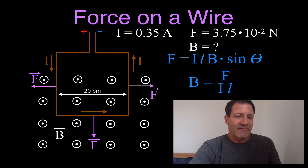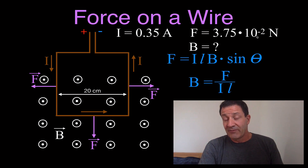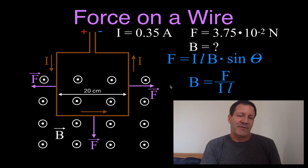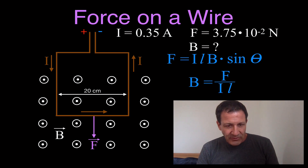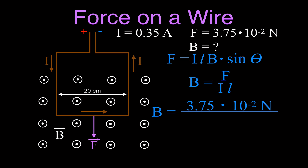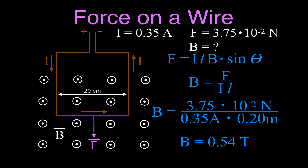So there is a force on each side of that loop. The force on the left side is to the left, and the force on the right side is to the right — equal and opposite forces that cancel each other out. The net force is pointing down. So for calculating the magnetic field, we use B equals F divided by I times L: 3.75 times 10 to the minus 2 newtons, divided by 0.35 amperes times 0.2 meters. The magnetic field strength is 0.54 teslas.